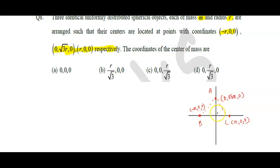Here the three points are of mass M and radius R. So we know the formula of center of mass. Center of mass formula is equal to (X₁ + X₂ + X₃)/3,